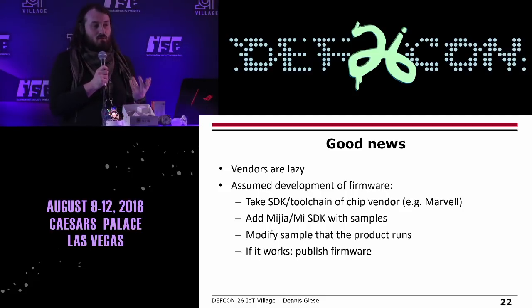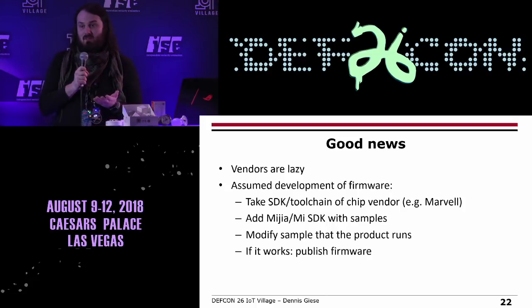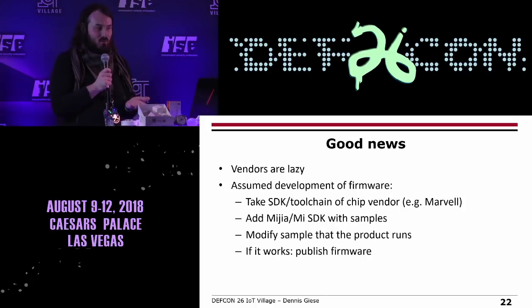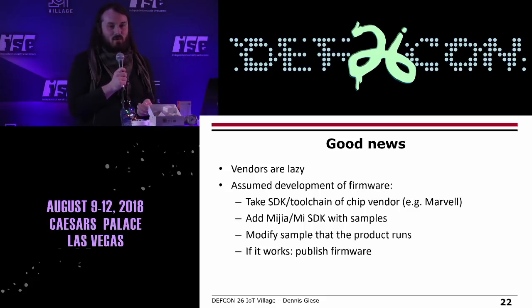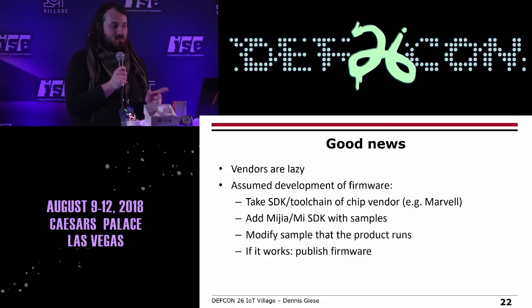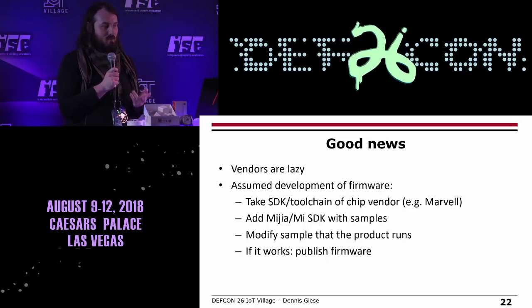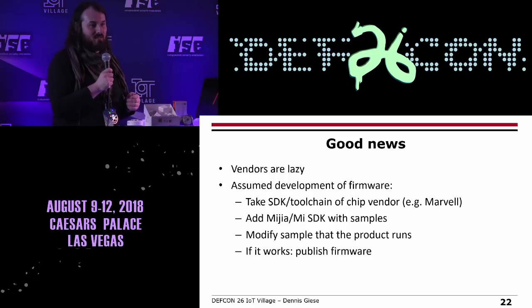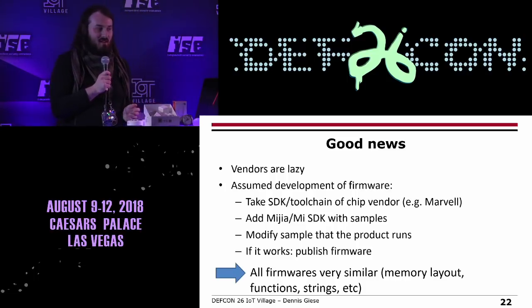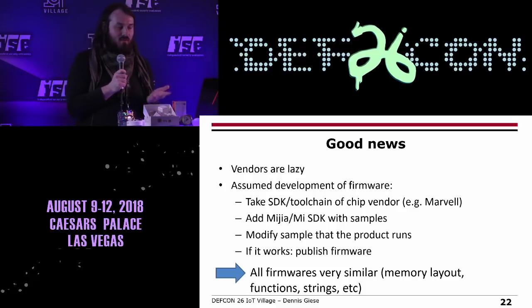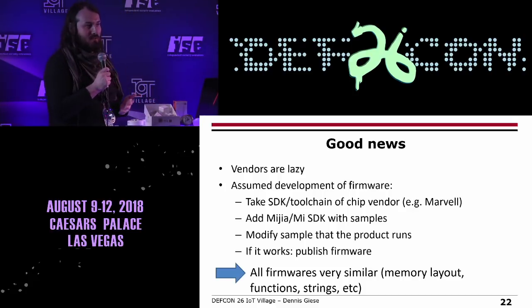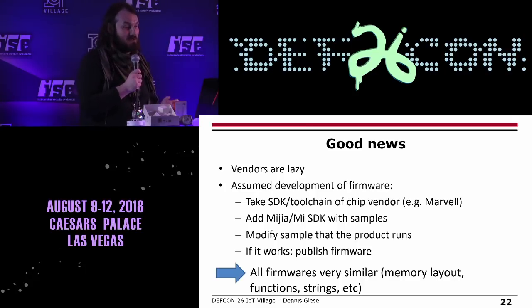One good thing is that vendors are always lazy. Looking at many firmwares, I believe the development process is: take the SDK or toolchain from the chip vendor (like Marvell), add the Xiaomi SDK, find an example that fits best — like controlling a GPIO to switch a light — change a little source code, compile, and publish. So all the firmwares are more or less similar: the memory layout, functions, and strings. If you know one, you get a better impression of the others quickly.